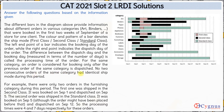No two consecutive orders of the same category had identical ship mode during this period. This means it is one single order — not two different orders split by shipping mode. If the first order is second class, the next order will be some other shipping mode, not second class again.